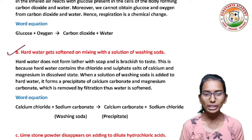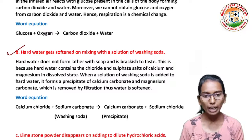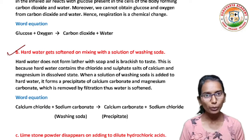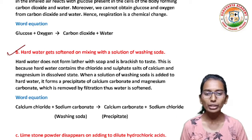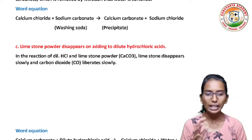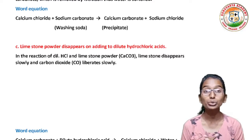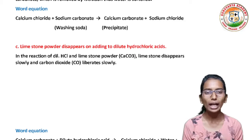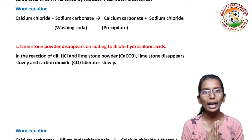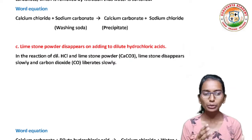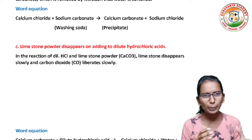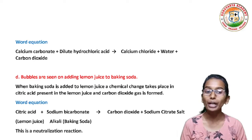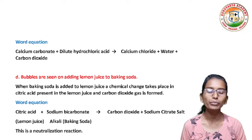The word equation: calcium chloride reacts with sodium carbonate (washing soda) gives calcium carbonate precipitate plus sodium chloride. Next: limestone powder disappears on adding to dilute hydrochloric acid. Calcium carbonate reacts with dilute hydrochloric acid, which gives calcium chloride, water and carbon dioxide.